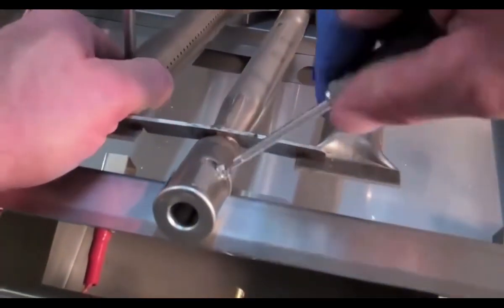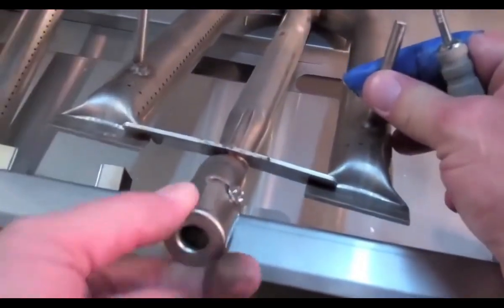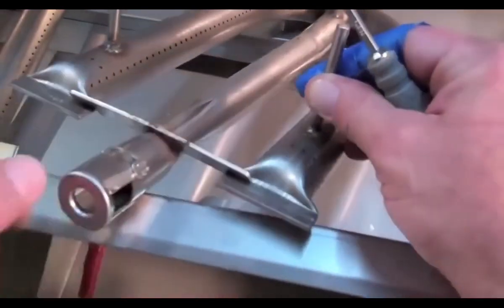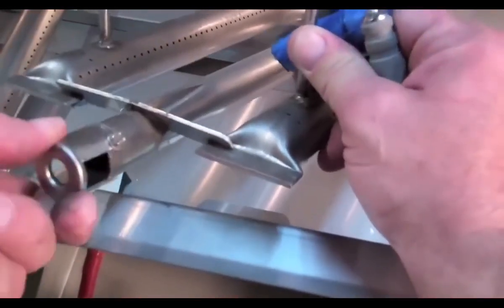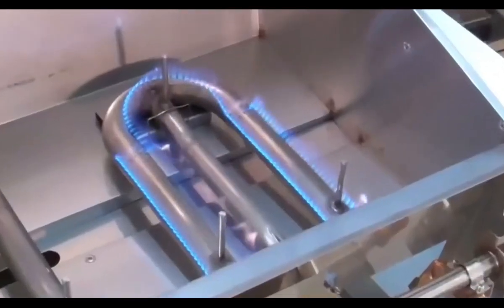Loosen the lock screw so the air shutter can adjust. Replace and ignite the gas.